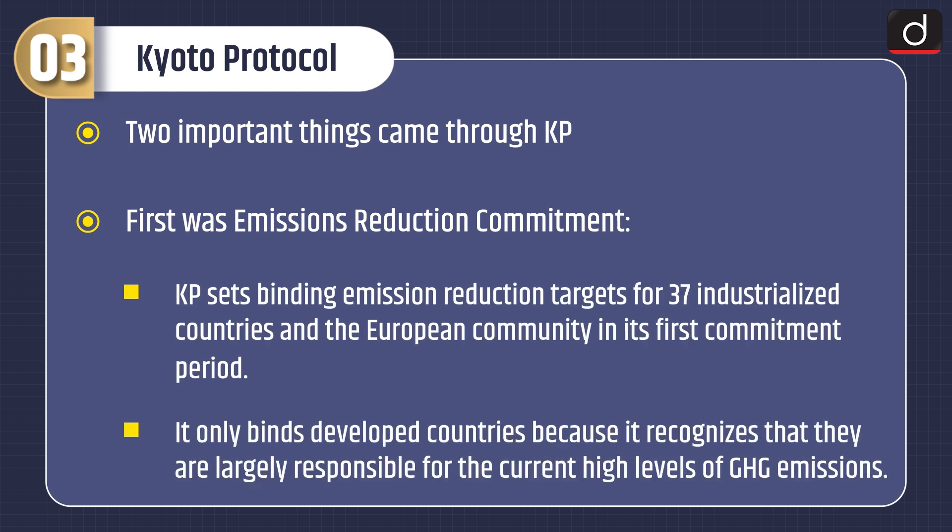The Kyoto Protocol sets binding emission reduction targets for 37 industrialized countries and the European Community in its first commitment period. It only binds developed countries because it recognizes that they are largely responsible for the current high levels of GHG emissions. The flexible market mechanisms included joint implementation, the clean development mechanism, and emission trading.